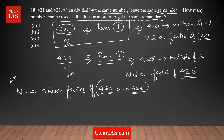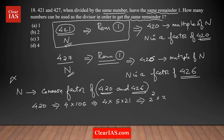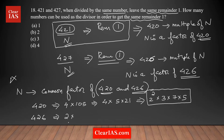Let's prime factorize these numbers. Starting with 420: 4 times 105, which is 4 times 5 times 21. Then 4 is 2 squared, 21 is 3 times 7, times 5. So the prime factorized form of 420 is 2² × 3 × 5 × 7. Now for 426: it's not divisible by 4, so starting with 2 — it's 2 times 213.